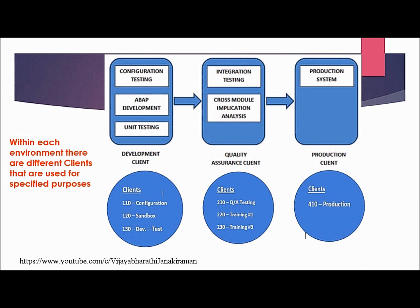Under the development environment, you need one client for configuration, one for sandbox, and one for unit testing. Under quality assurance, there is one for QA testing, one for training, and others for various purposes. Under production, there is one client. We will see each of these in detail in the next few slides.